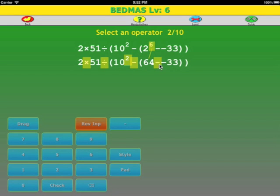We have innermost brackets, one operator. We have 64 minus negative 33. This is the same as 64 plus 33. And we have 97.